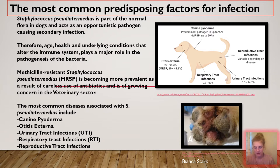Therefore, the health, age, and underlying physiological conditions such as allergies, endocrinopathies, cancer, and ectoparasites play a major role in the pathogenesis of the bacteria.